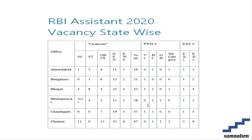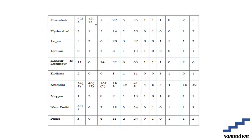RBI has also released state-wise vacancies. For a city like Ahmedabad, SC will have 1 vacancy, OBC will have 4 vacancies, and General will have 11 vacancies. You can see the complete state-wise list by visiting examination.com.